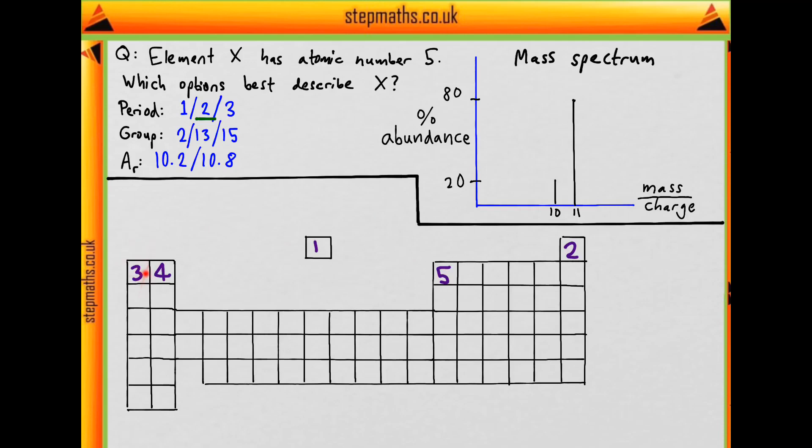What about the group? We have 1 to 10 transition metals, then 1 here. So it's 13 columns along, which means it must be group 13.